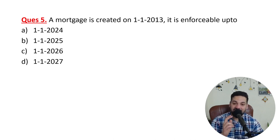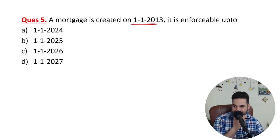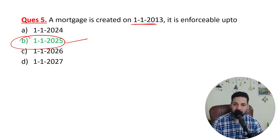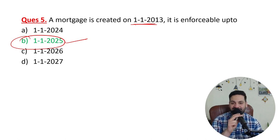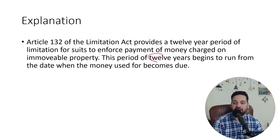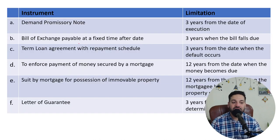Now the Limitation Act — very very important. A mortgage created on 1st January 2013: if you do not claim payments, issue notices, or take any action till 1st January 2025, your right to reclaim the property is extinguished. Under Article 132 of the Limitation Act, you must take action within 12 years, after which your rights are gone.